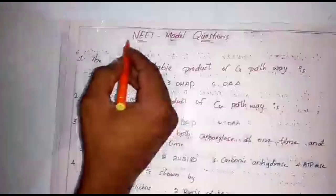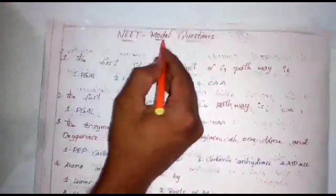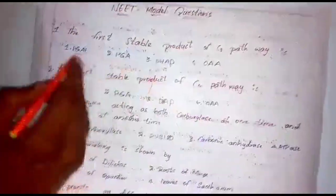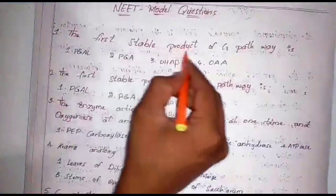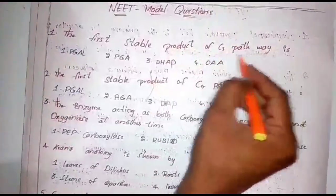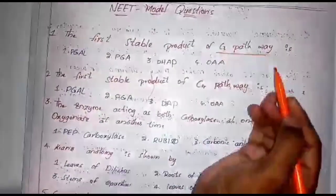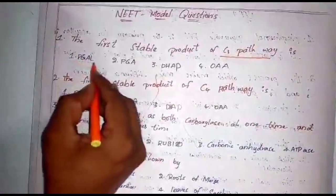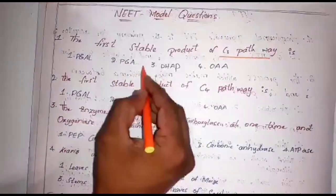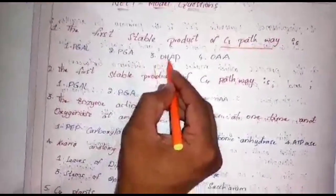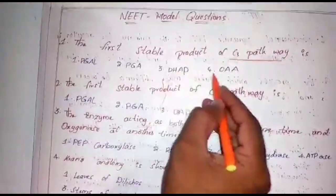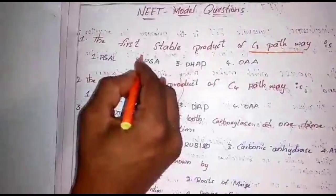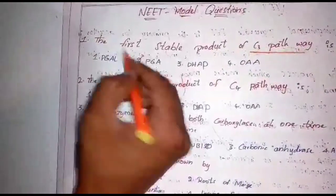We can now see some NEAT model questions from today's topic. The first question: the first stable product of C3 pathway in common plant species. Options: phosphoenolpyruvate, phosphoglyceric acid, dihydroxyacetone phosphate, or oxaloacetic acid. In C3 plants, the first stable compound is phosphoglyceric acid, which consists of three carbons.